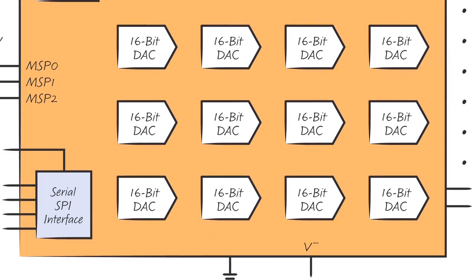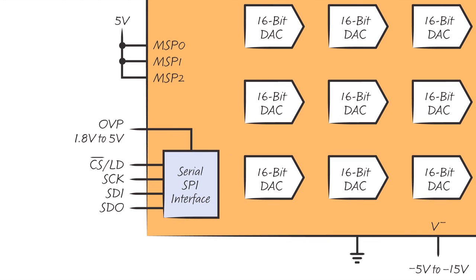The range for each output can be set independently through the SPI interface when the three M-SPAN pins are configured for SoftSpan. The M-SPAN pins can also set all DACs to a single range, reducing software overhead for applications requiring only a single range on all DACs.